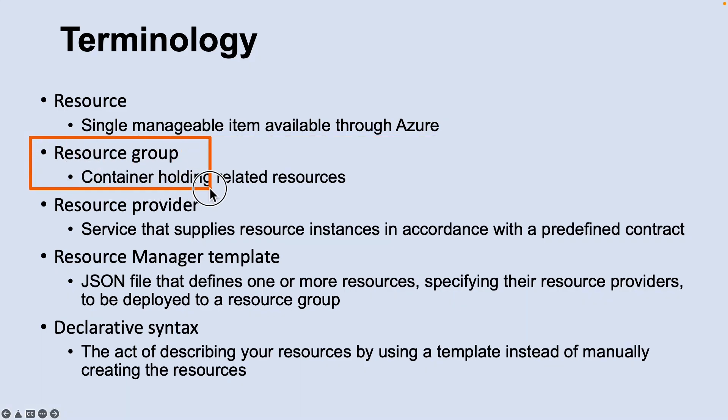The second one is a resource group. A resource group is a container that holds related resources for an Azure solution. The resource group can include all the resources for the solution or only those resources that you want to manage as a group. You decide how you want to allocate resources to a resource group based on what makes the most sense for your organization.